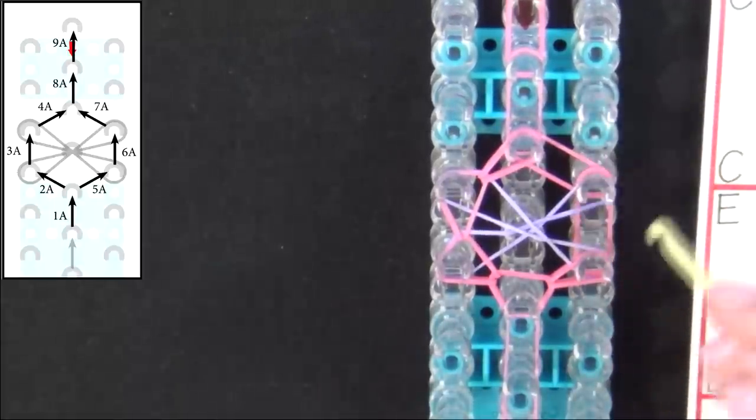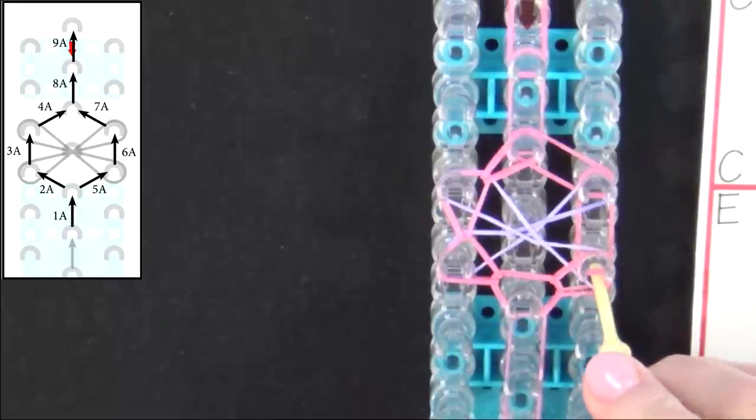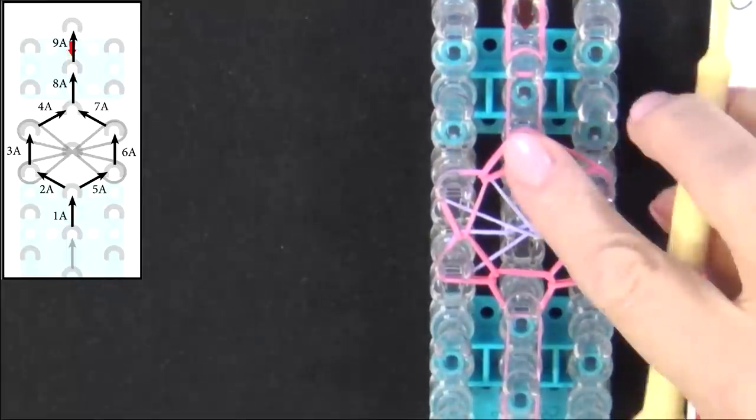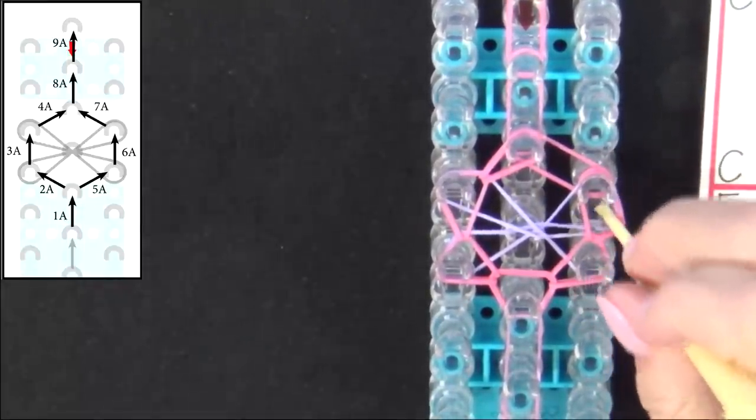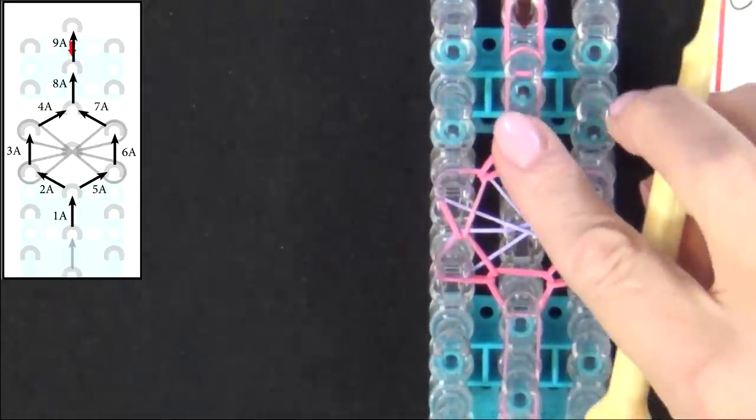Now when we loop band 6A we will have to pull all the bands above that back and pull that forward. 7A, the same thing. Pull all the bands above that band back, reach in and grab it, and pull it to the center pin.